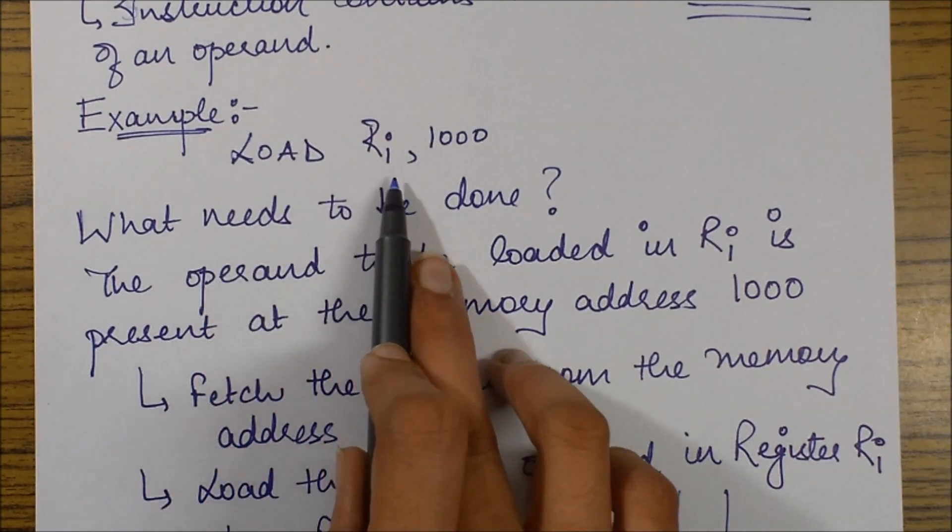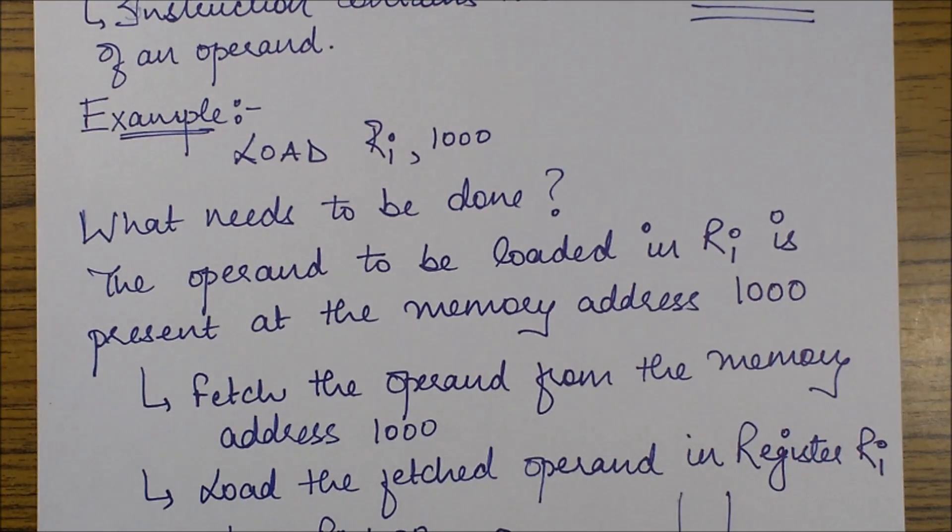The example is load RI with 1000. Now you can essentially make out the difference if you've seen the previous video of immediate addressing mode. In case you have not seen, please view that video.